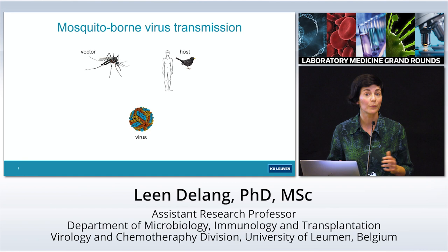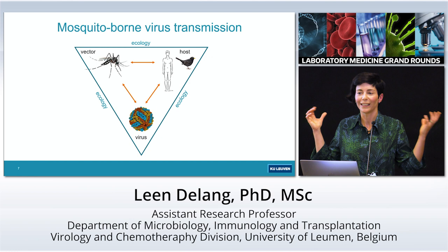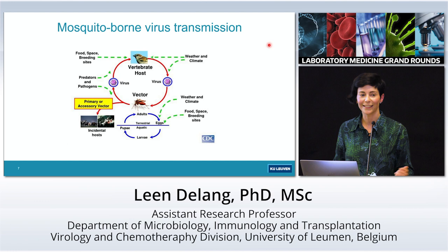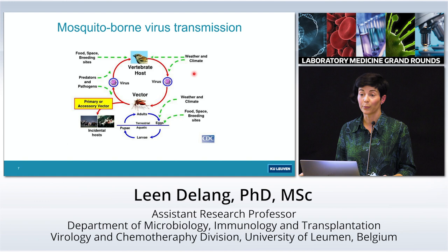Mosquito-borne viruses are transmitted by mosquitoes to vertebrate hosts. These can be humans, but also other animals like birds, horses, and other animals. These are the three main components of the transmission cycle of a mosquito-borne virus. Of course, there are many elements that can influence this transmission cycle — the virus, the vector, and the vertebrate hosts.